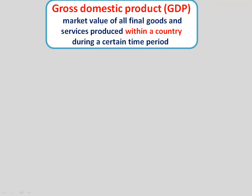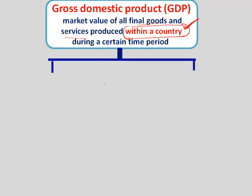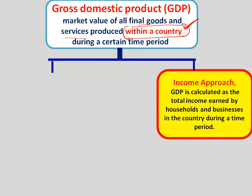Gross domestic product is the market value of all the final goods and services produced within a country during a certain time period. The most important aspect is that it is production within the country — within the geographical limits. So if there is a foreign company which has established a unit in Pune and they have produced some goods, those would be considered as part of our GDP.